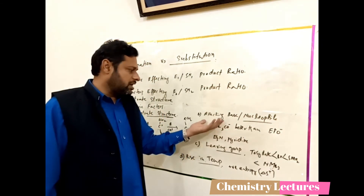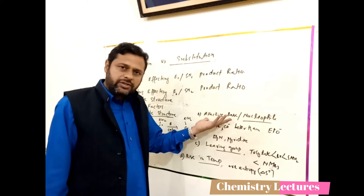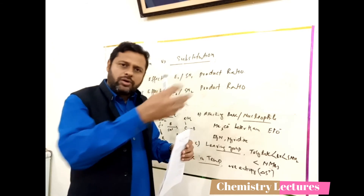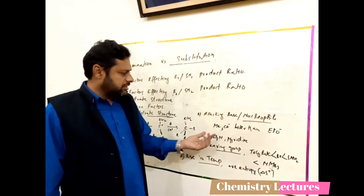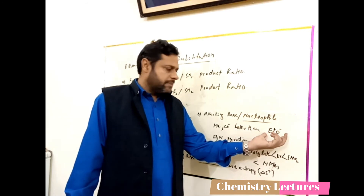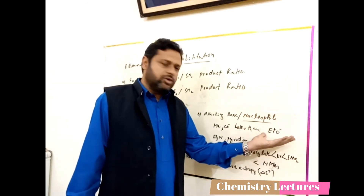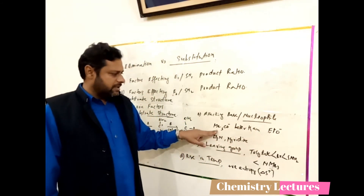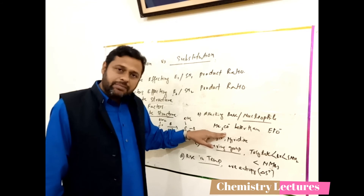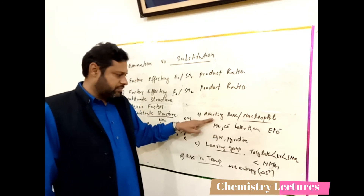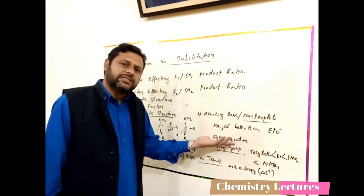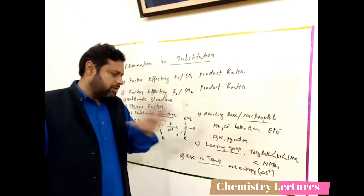For example, comparing tert-butoxide (Me₃CO⁻) to ethoxide — ethoxide will attack as a nucleophile, but a bulky base like tert-butoxide, with three methyl groups attached to oxygen, cannot act as a nucleophile and will only act as a base, increasing the elimination product. Similarly, triethylamine and pyridine are bulky bases that increase elimination and suppress substitution.